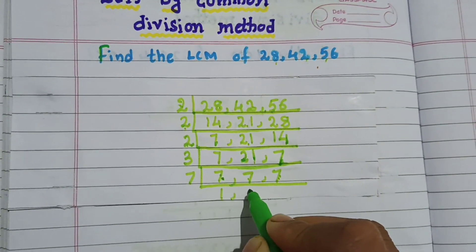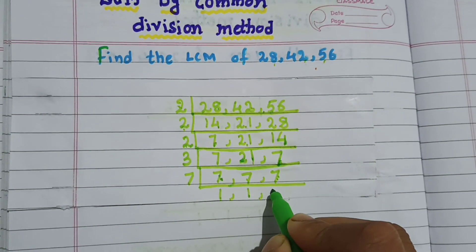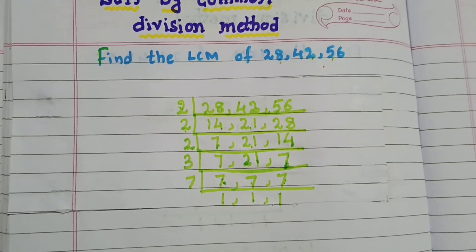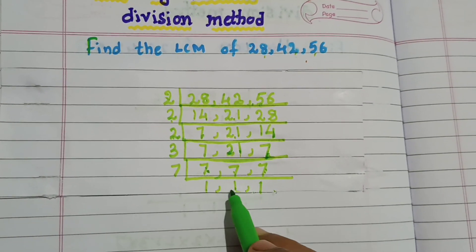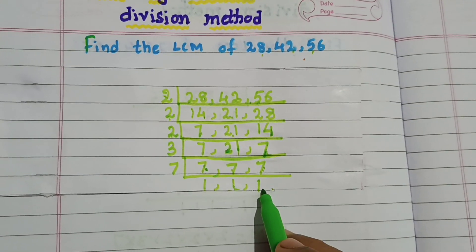So, go for the next prime number, that is 7. 7 ones are 7, 7 ones are 7, 7 ones are 7. Now, I need to stop here because as a quotient, I got all 1 only.